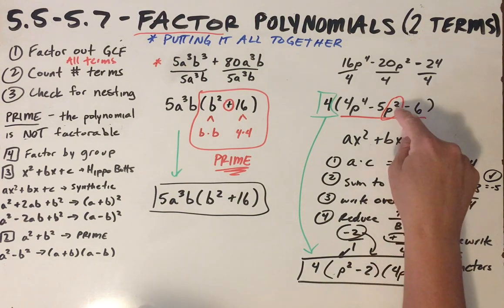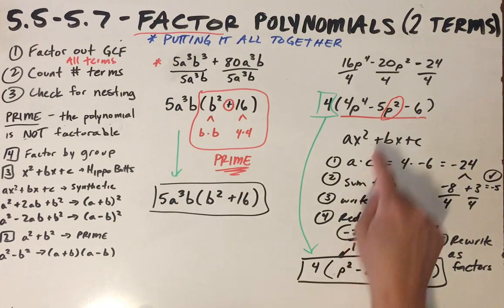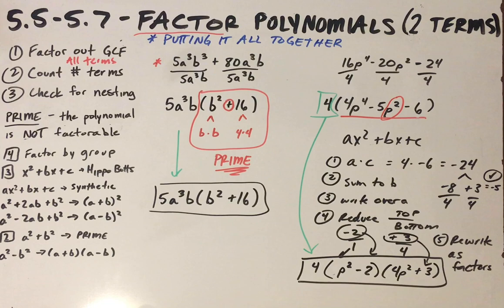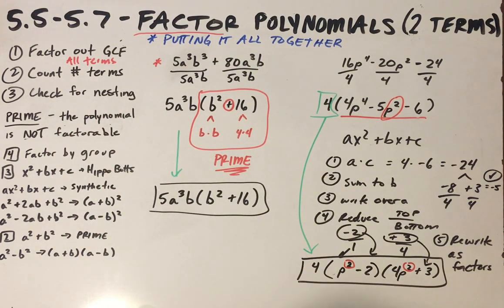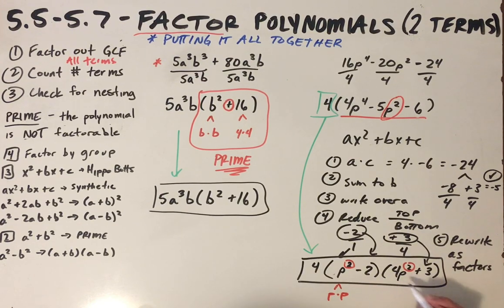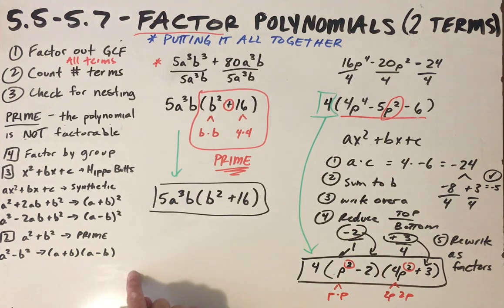Each factor needs whatever the middle term's variable is — in this case p squared. Now I check for nesting, because these factors contain squared terms. Looking inside each factor: 2p times 2p but 3 is not a perfect square, and p times p but 2 is not a perfect square, so neither factor is a sum or difference of squares. No further factoring is possible. The complete factored form includes the GCF: 4(p² − 2)(4p² + 3).